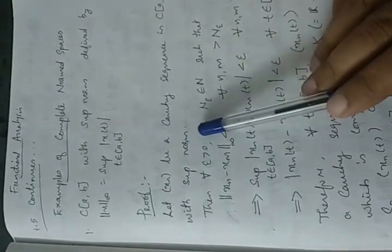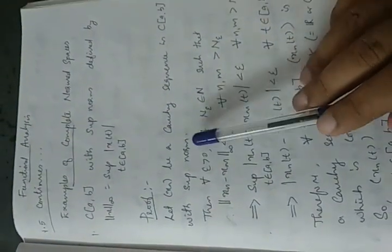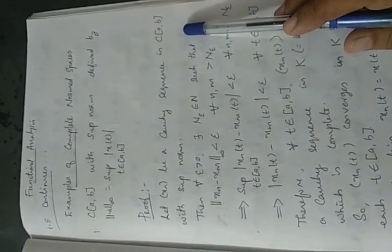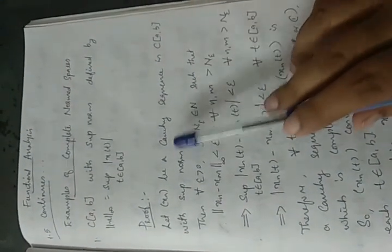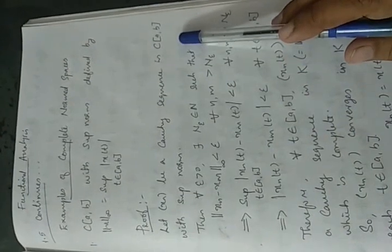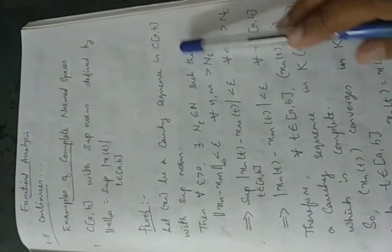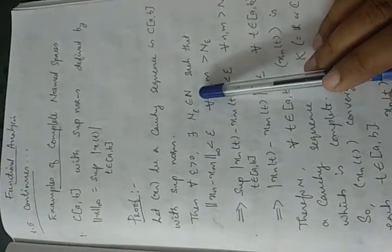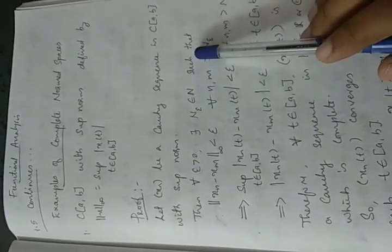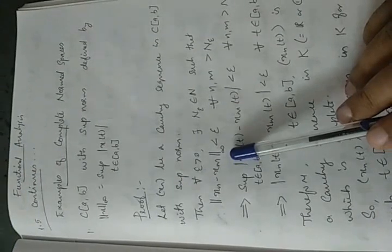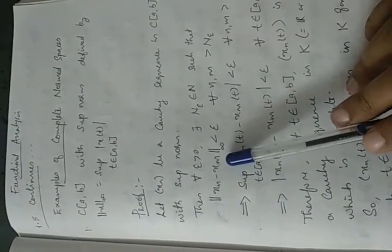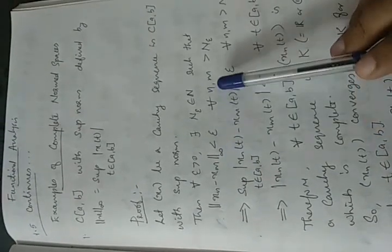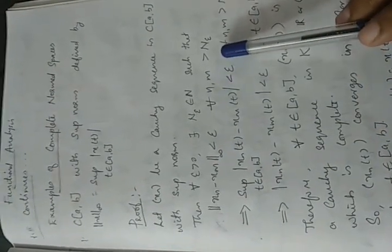For that, we consider a Cauchy sequence Xn in the space C[a,b]. Xn is a Cauchy sequence in C[a,b] means that corresponding to every ε > 0, there exists a natural number N(ε) such that the infinity norm of Xn minus Xm is less than ε for every n and m greater than N(ε).